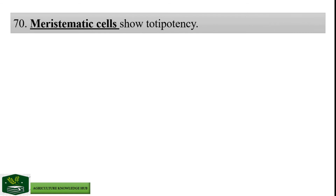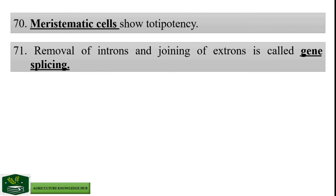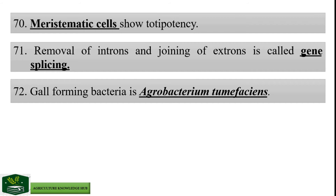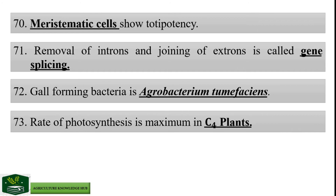Meristematic cells show totipotency. Removal of introns and joining of exons is called gene splicing. Gall-forming bacteria is Agrobacterium tumefaciens. Rate of photosynthesis is maximum in C4 plants. In SWOT analysis, T stands for Threats.